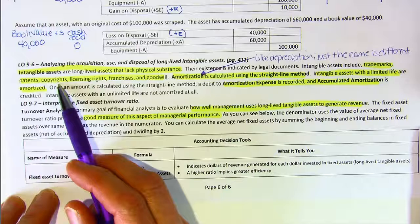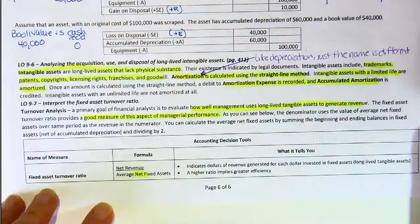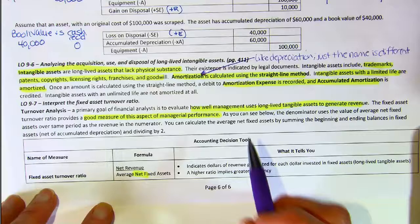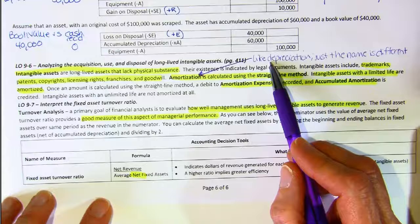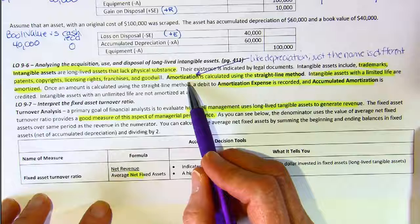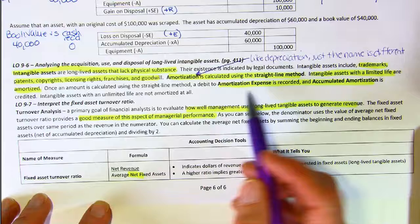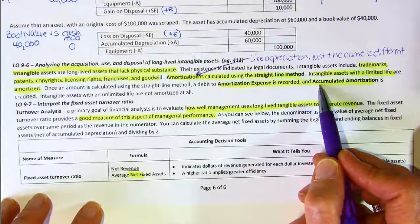Some long-lived intangible assets have limited lives, and if so they depreciate and wear out — except we don't call it depreciation, we call it amortization. Amortization is like depreciation but we use a different name because it's a different type of asset. It's calculated using the straight-line method. We debit amortization expense and credit accumulated amortization, very similar to our depreciation entry.